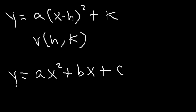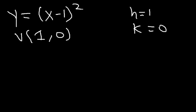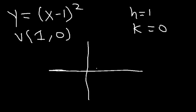Let's say we have the function y equals (x minus 1)². Notice that h is the number we see inside — h is 1. Since there's no number outside, k is 0, so the vertex is (1, 0). This graph shifts one unit to the right — that's a horizontal shift — and the vertex is at that point.